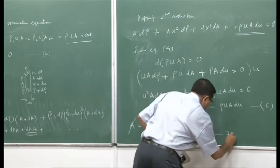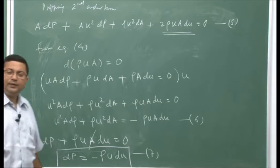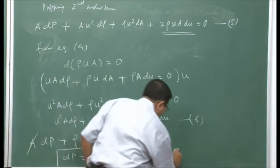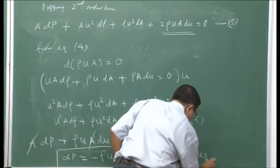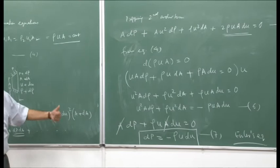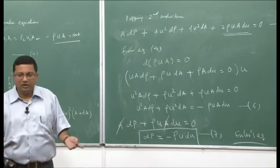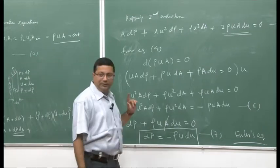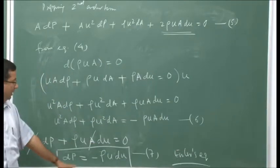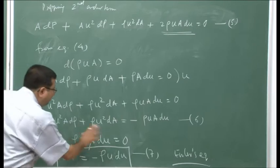This is a very important equation in fluid mechanics called Euler's equation. It is valid under our assumptions: steady, inviscid, adiabatic, no body forces, potential energy negligible, and quasi-1D. This is the differential form of the momentum equation.